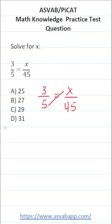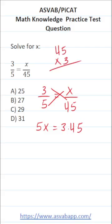More specifically, I could do 5 times x, which is 5x, equals 3 times 45. And so as not to make any mistakes, I'm going to do 45 times 3 off to the side. 3 times 5 is 15, carry a 1. 4 times 3 is 12, plus 1 is 13. So this becomes 5x equals 135.